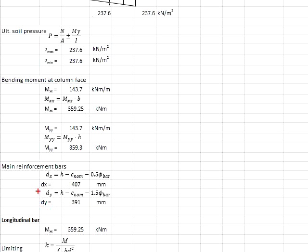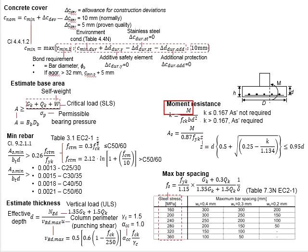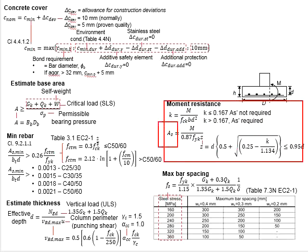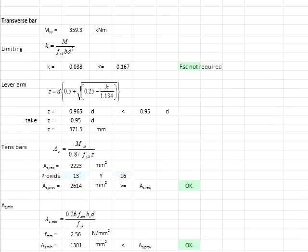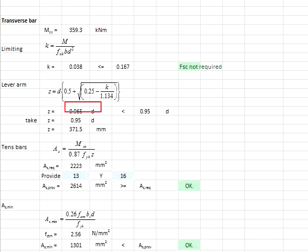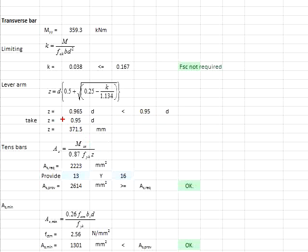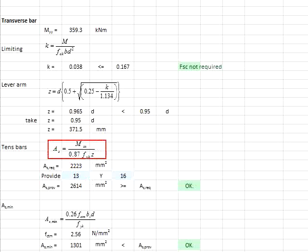You may design for the moment resistance based on the smaller d. Adopting the formulas to determine the amount of reinforcement, after substitution you get k equals 0.038 and Z equals 0.965d. Since Z cannot be greater than 0.95d, you adopt Z equals 0.95d, which equals 371.5 mm.